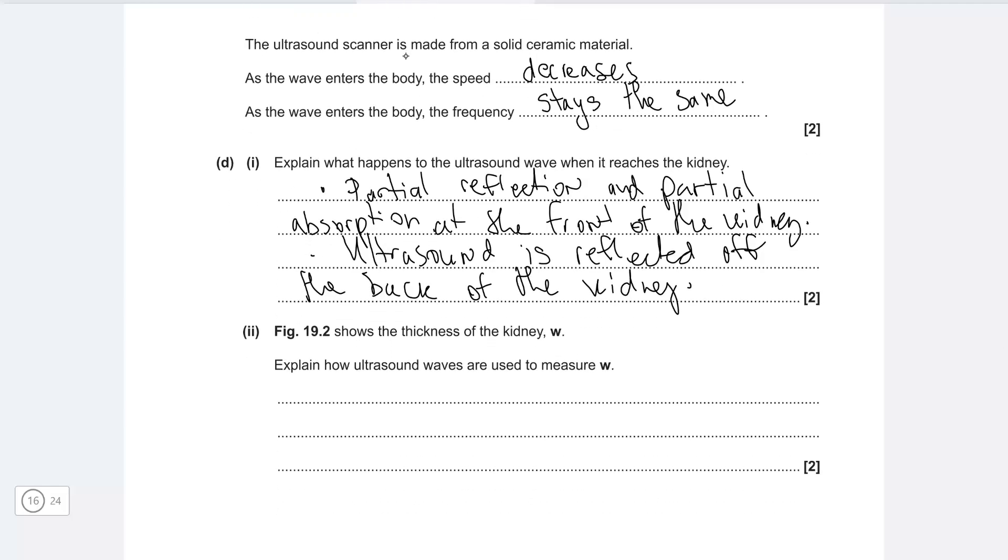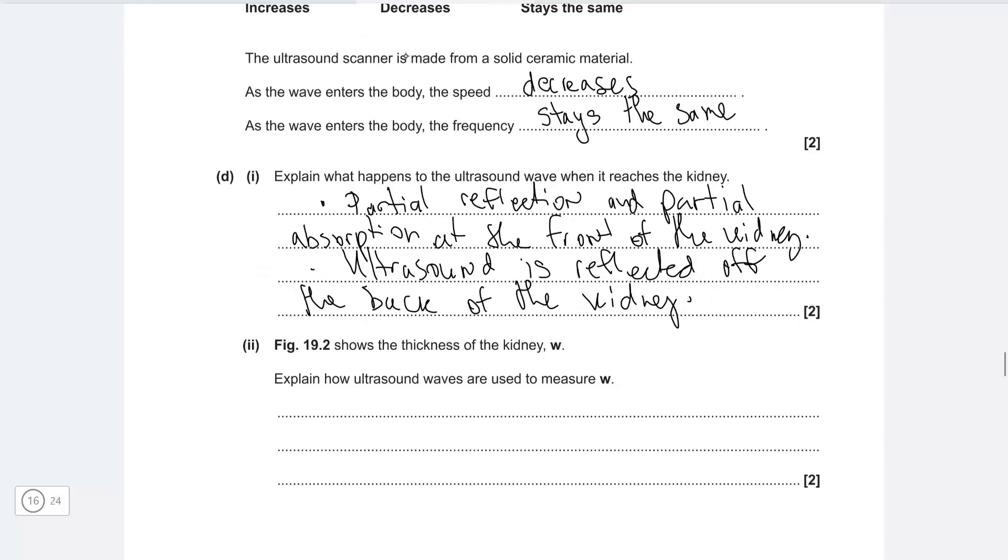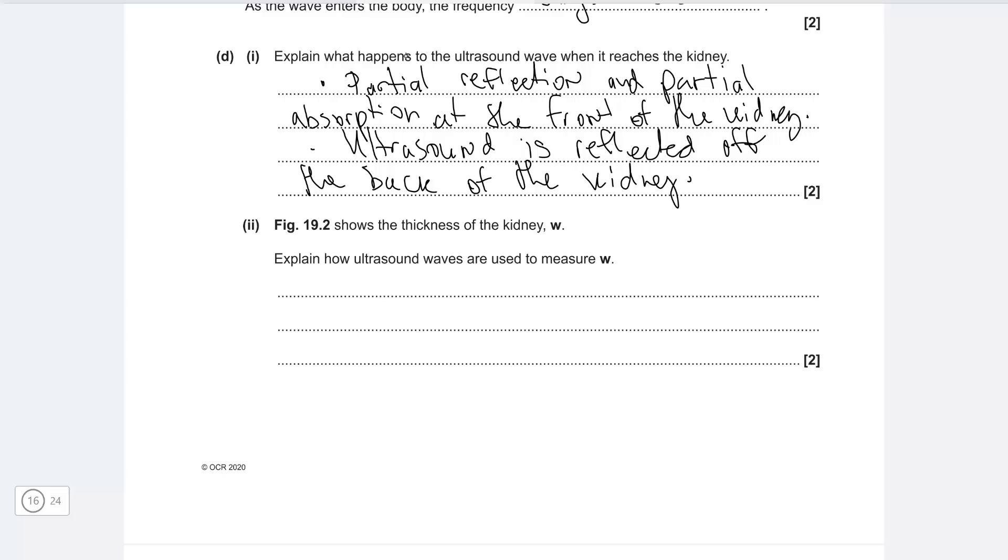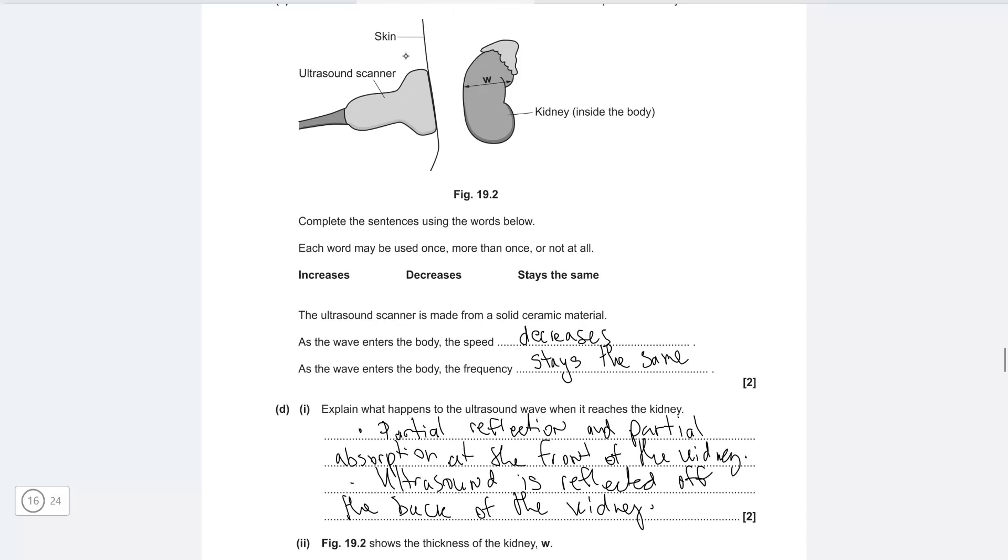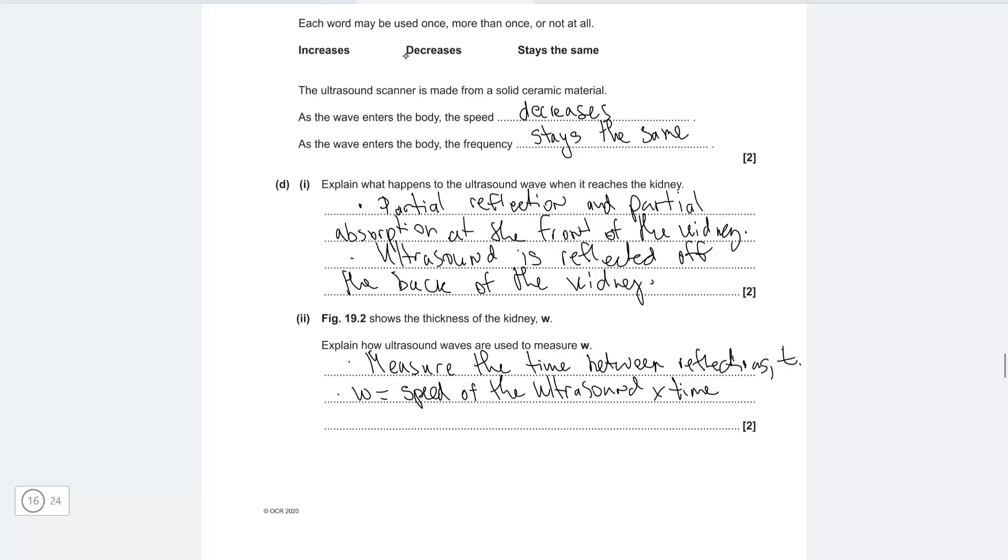Now figure 19.2 shows the thickness of the kidney which is w. Explain how the ultrasound waves are used to measure w. Okay so the device actually measures the time between reflections I'm going to call that t and the thickness w will be given by the speed of ultrasound because it's just speed of the ultrasound times the time that has been measured but remember the time that you're measuring is for the wave to actually go here and then come back so what we need to do is actually divide that by two to get the right answer.